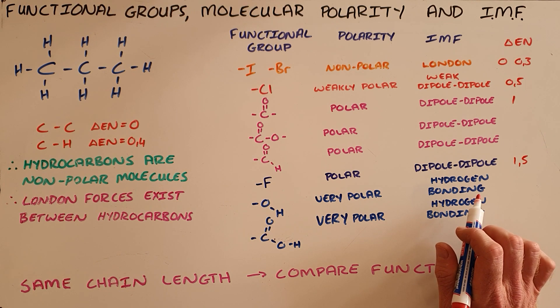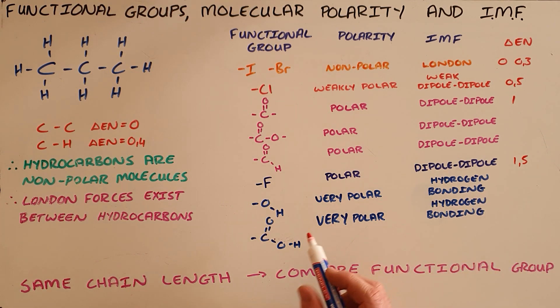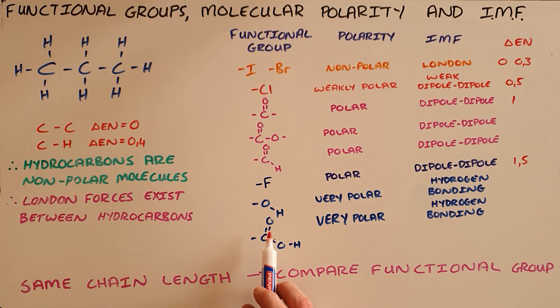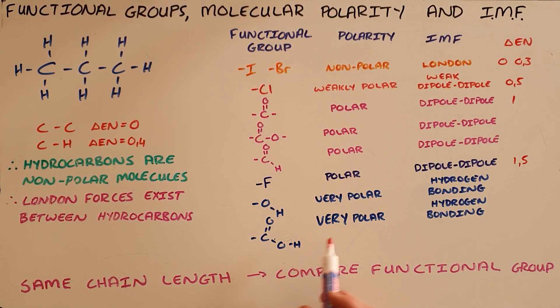And finally, we have the carboxyl group of our carboxylic acids, which is our carbonyl group and the hydroxyl group, which makes this even more polar than the hydroxyl group on its own, which makes these hydrogen bonding forces the strongest.